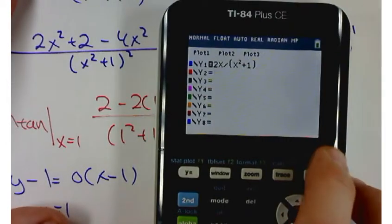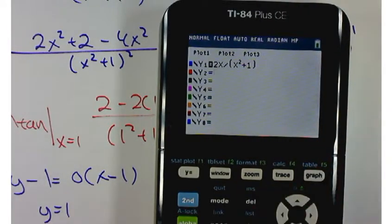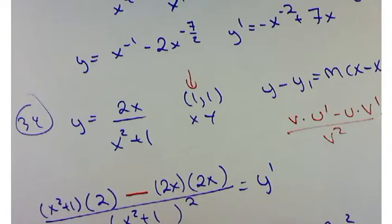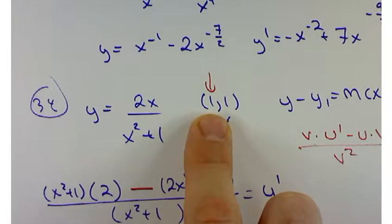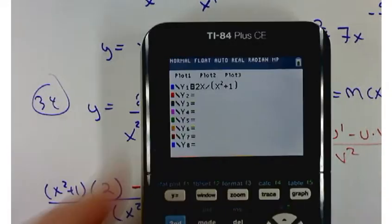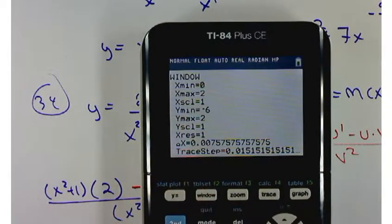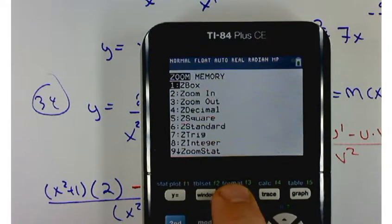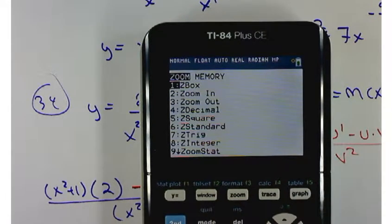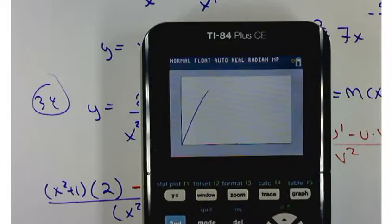And I want to see that graph around this point, which is 1 and 1. So I'm going to choose my window between 0 and 2. That way it centers the graph where I want to see its tangent line. And then I'll hit zoom 0. That'll fit things nice and neatly in there.